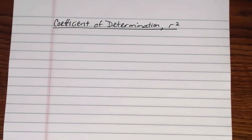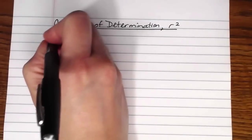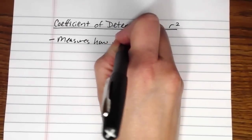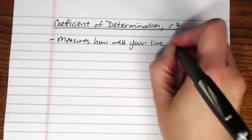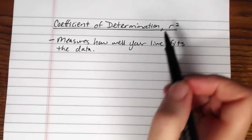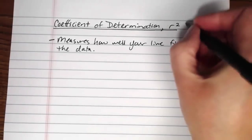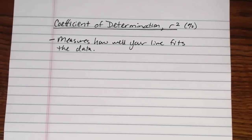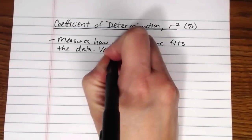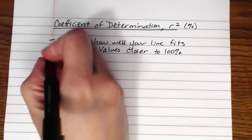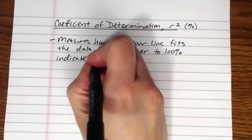So that brings us to this notion of the coefficient of determination. And there are essentially two things that the coefficient of determination, r squared, does for you. The first one is it essentially measures how well your line fits the data. r squared by contrast to r, r is always expressed as a decimal. r squared will be expressed as a percentage. Your calculator will give it to you in a decimal, but you will want to express it as a percentage.